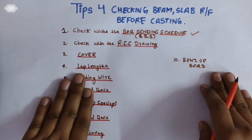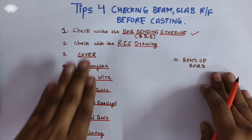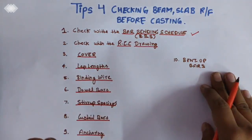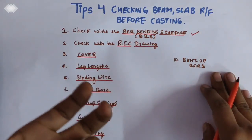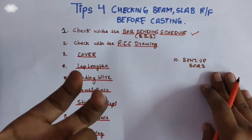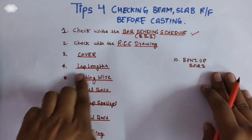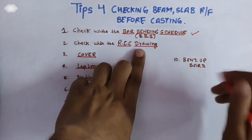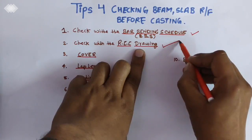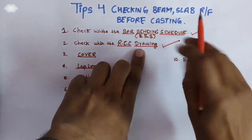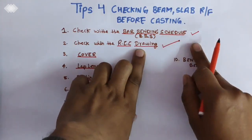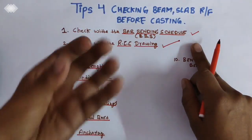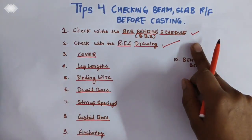The second tip: check with the RCC drawing — the general drawing provided by the consultant or the design engineer, made in AutoCAD. You have to follow the drawing. From the drawing you will make BBS, and from the BBS you will follow the respective guidelines.